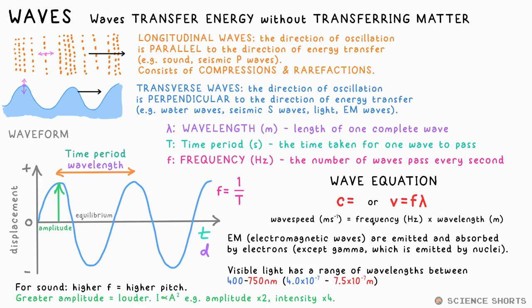The intensity of a wave is proportional to the amplitude squared. That means that if the amplitude doubles, the intensity quadruples.